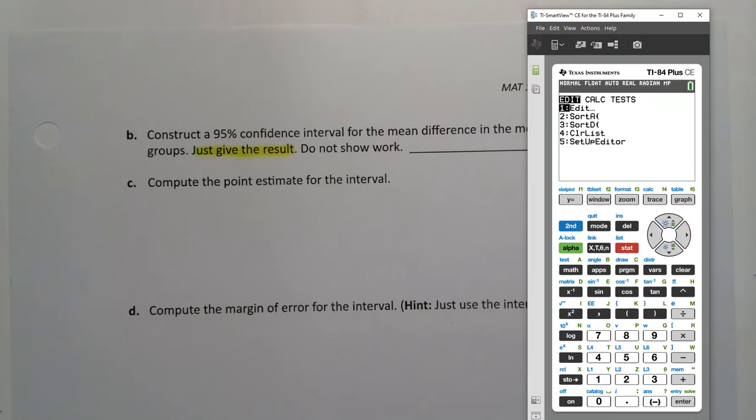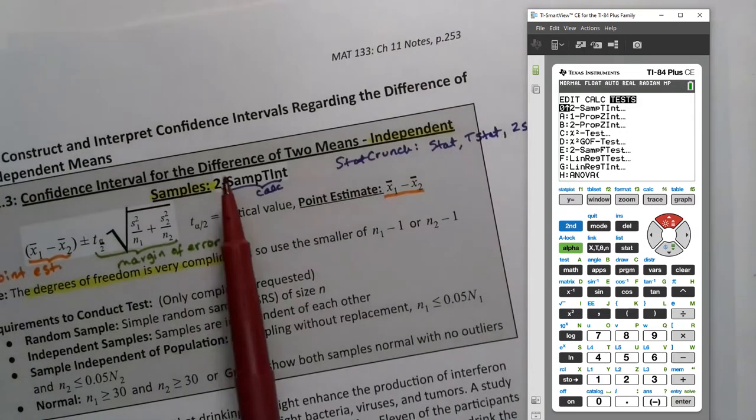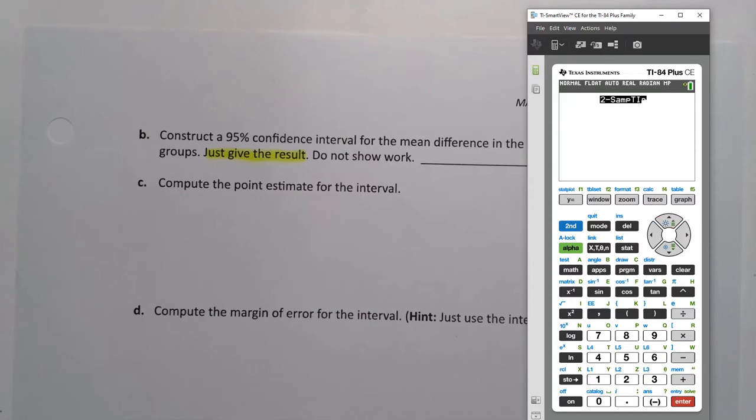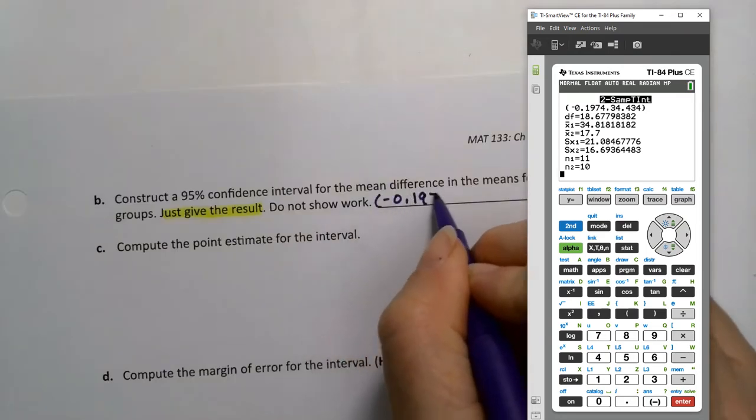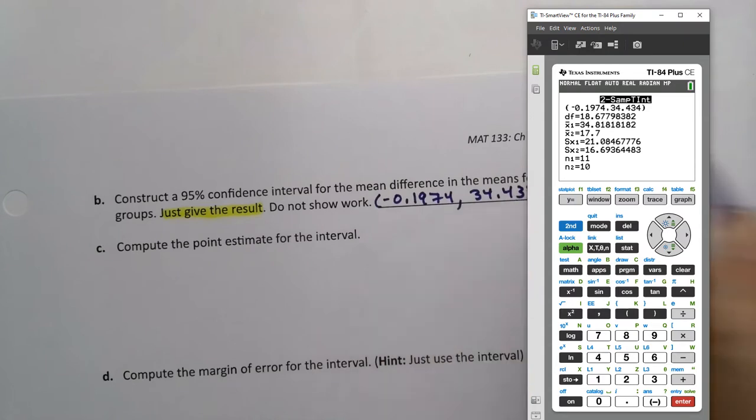I'm going to go to stat, tests, and I'm looking for 2-SAMP-T-INT, which is right there at number zero. So 2-SAMP-T-INT, there it is. It said so on the previous page, right here. 2-SAMP-T-INT, so that's where we're going. And we actually have data this time. We have a row of data for tea and a row of data for coffee. I put T in L1, I put coffee in L2. Leave the frequencies at 1. That's literally just saying each one of the items in your column occurs once, which is the way we always do this. I want a 0.95, so that's good. It says 0.95 right there, 95%, so we're good. And just like with the test, we always do pooled no, always. And click calculate. And there we have it: negative 0.1974 and 34.434.